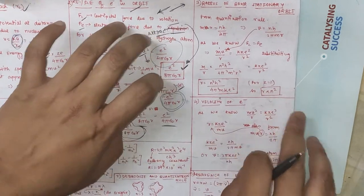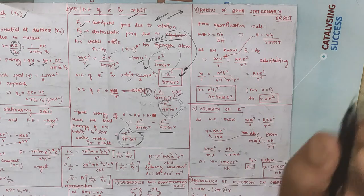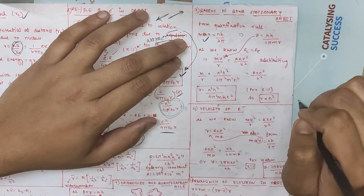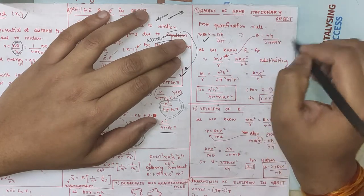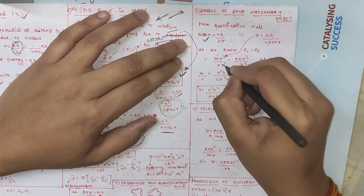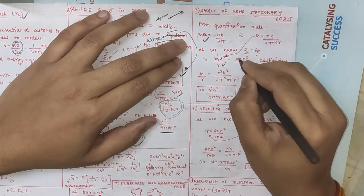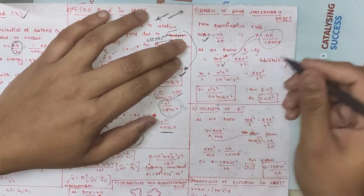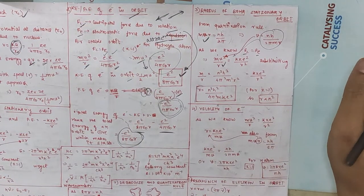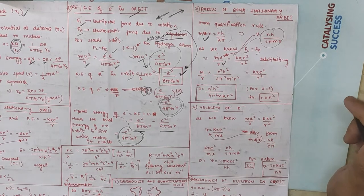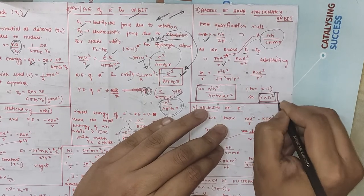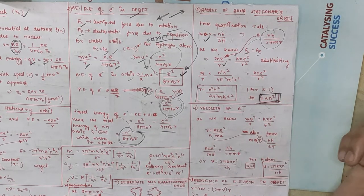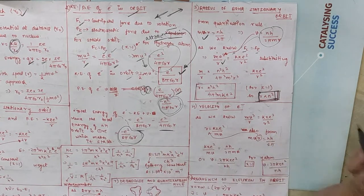Now let's see the radius of the stationary orbit — the radius of the orbit in which the electron is floating. We have Bohr's quantization rule: mvr = nh/(2π). From this, velocity v = nh/(2πmr). Substituting this into the force balance equation mv²/r = kZe²/r², we can eliminate v and solve for r. The key result is that r is directly proportional to n², where n = 1, 2, 3 is the orbit number.